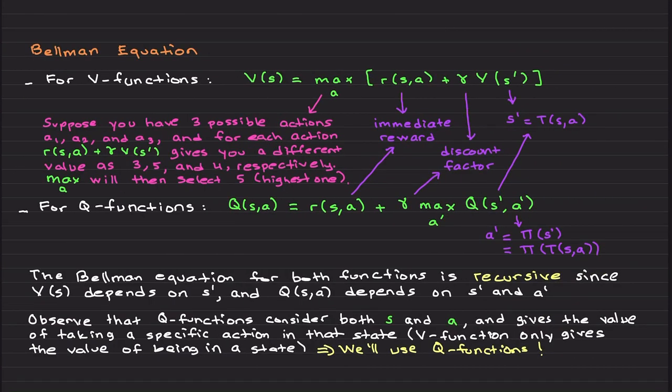So Bellman equation differs for V functions and Q functions. Within the context of V functions, this is the Bellman equation: max of actions, and inside the brackets immediate reward, this is the discount factor we discussed in the previous videos. Gamma close to one represents long term more stable learning.